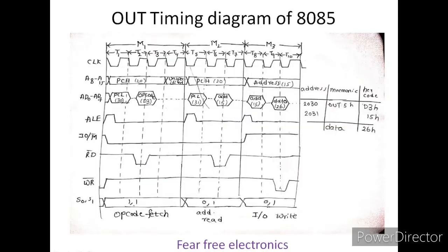Going to the timing diagram. This is the timing diagram of our discussed example. At address 2030, there is the OUT instruction. OUT has hexadecimal value D3h. At address 2031, there is the output device address 15h. We assume the data is 26h in the accumulator.